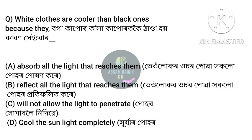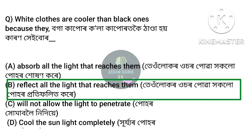White clothes are cooler than black ones because — Anchar Option B: They reflect all the light that reaches them. White clothes reflect all incoming light, making them cooler than black clothes which absorb light.